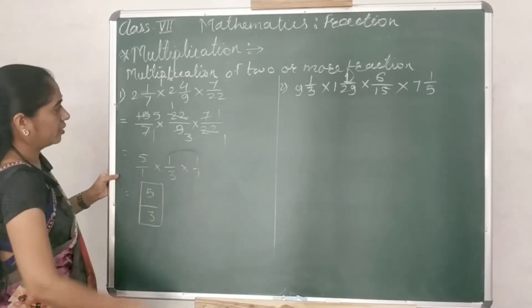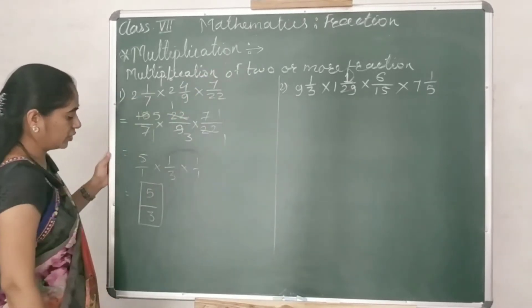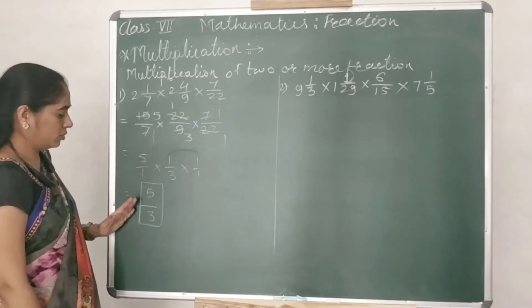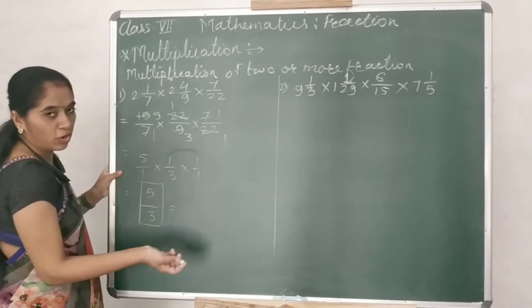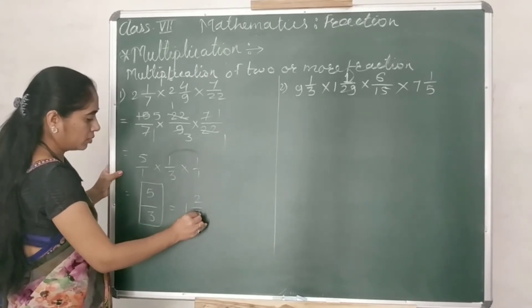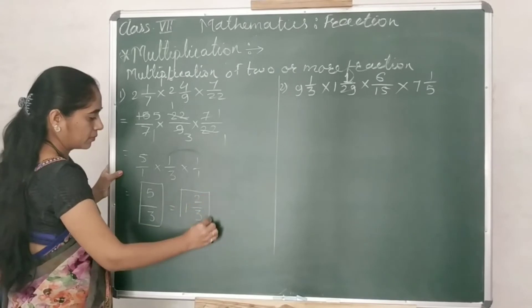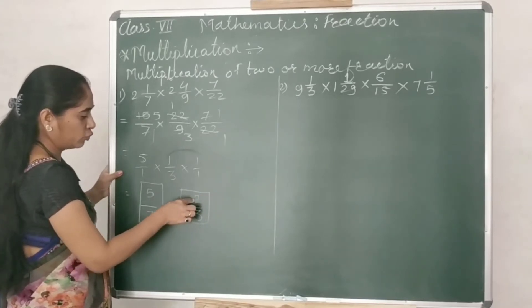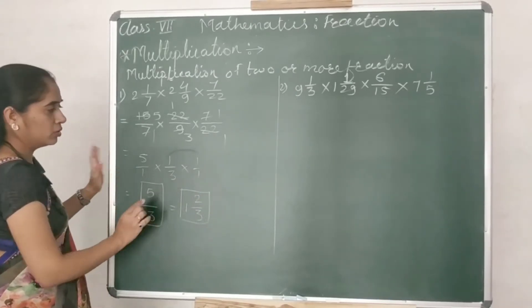So what is your final answer of such a big multiplication? Just 5 upon 3. You can write it in the form of mixed fraction like 1 integer 2 upon 3. 3 ones are 3, 3 plus 2, 5. 5 upon 3, 5 upon 3.